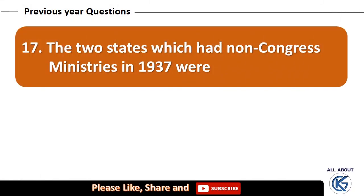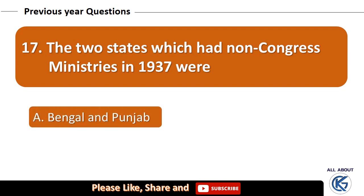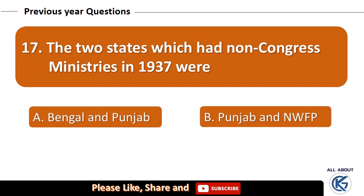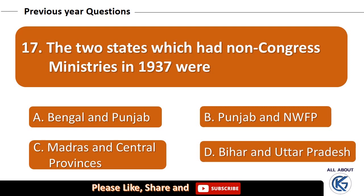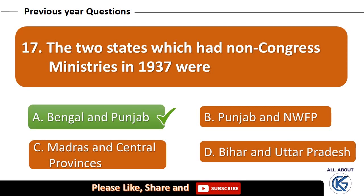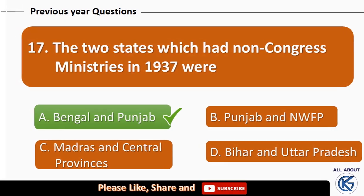The two states which had non-Congress ministries in 1937 were: Bengal and Punjab, Punjab and NWFP, Madras and Central Province, or Bihar and Uttar Pradesh? The right answer is Bengal and Punjab.